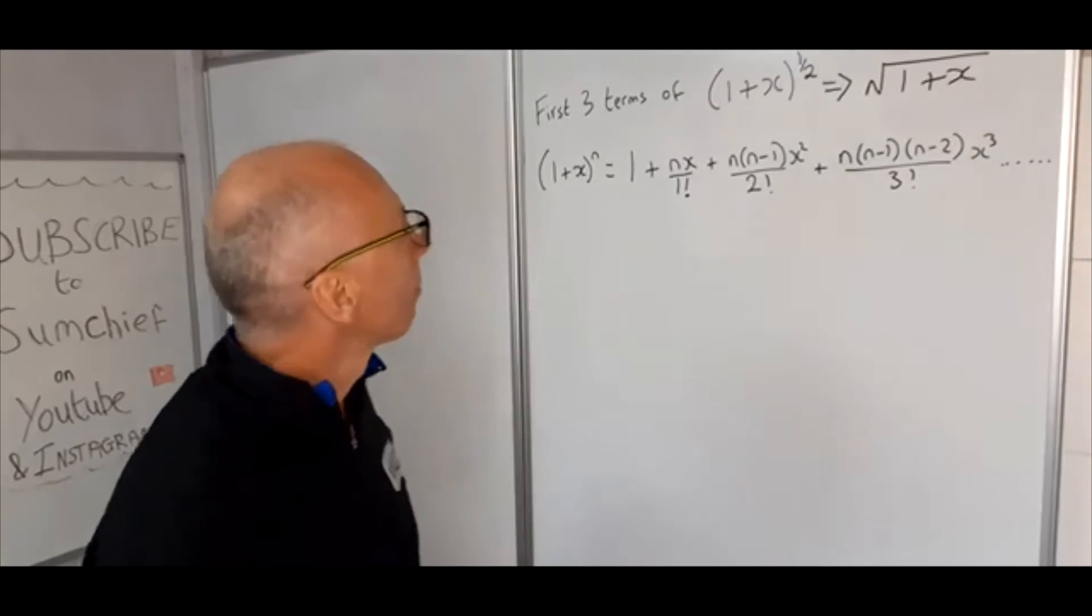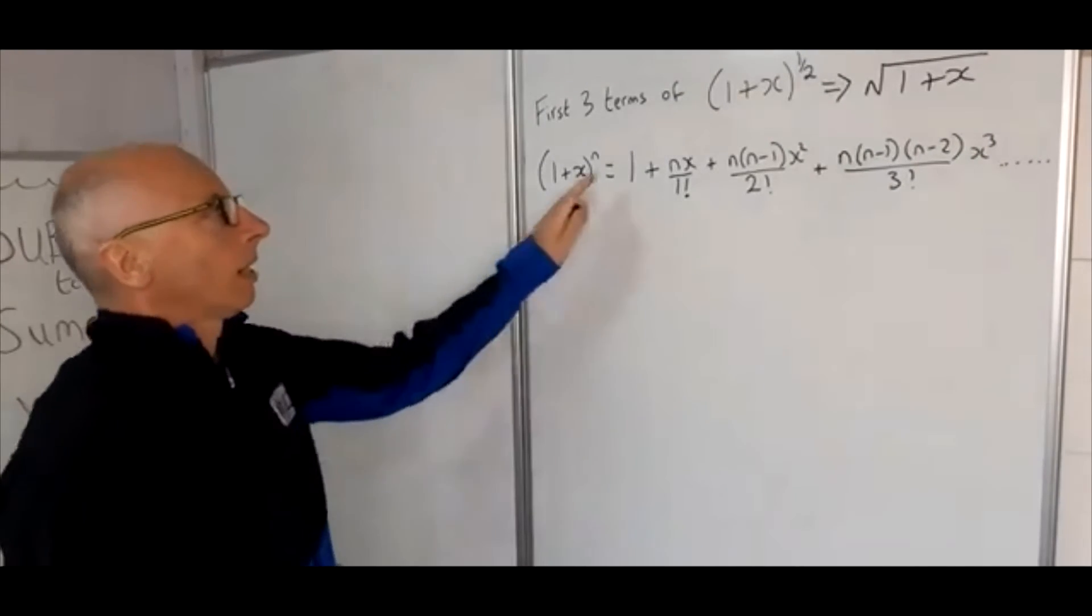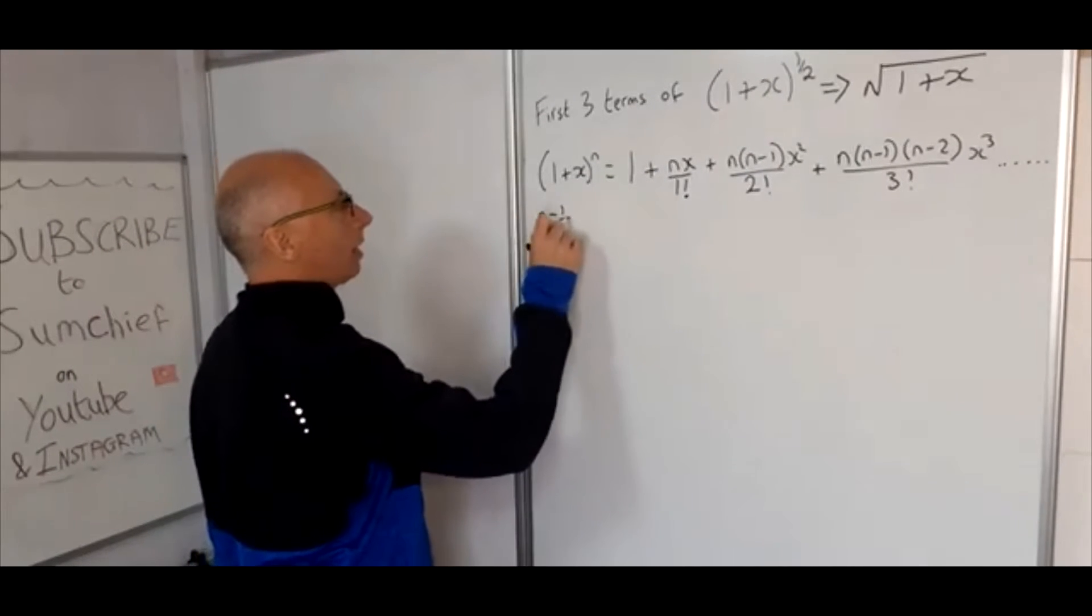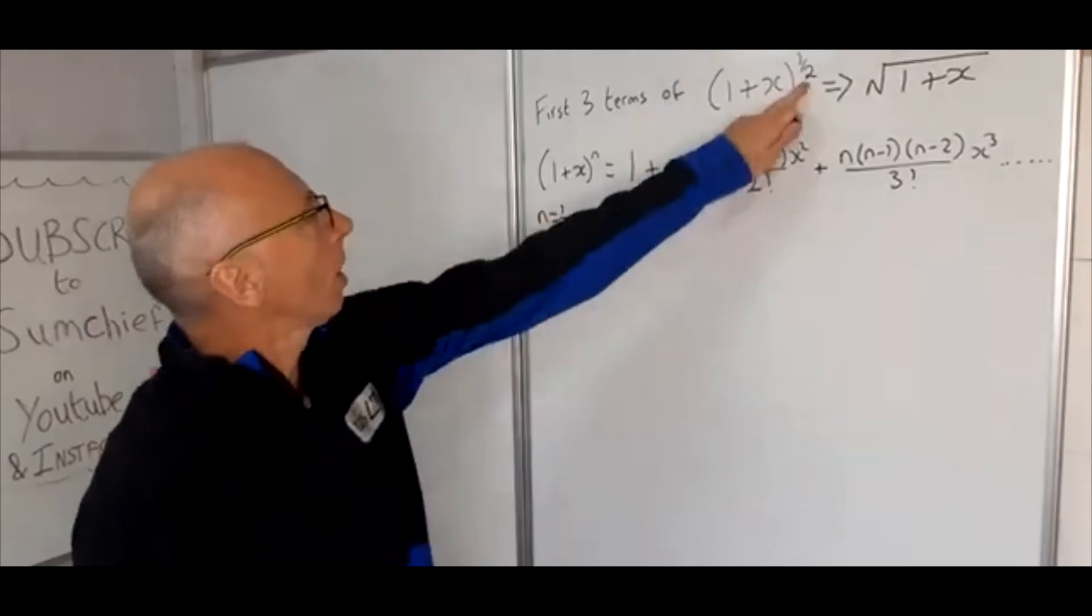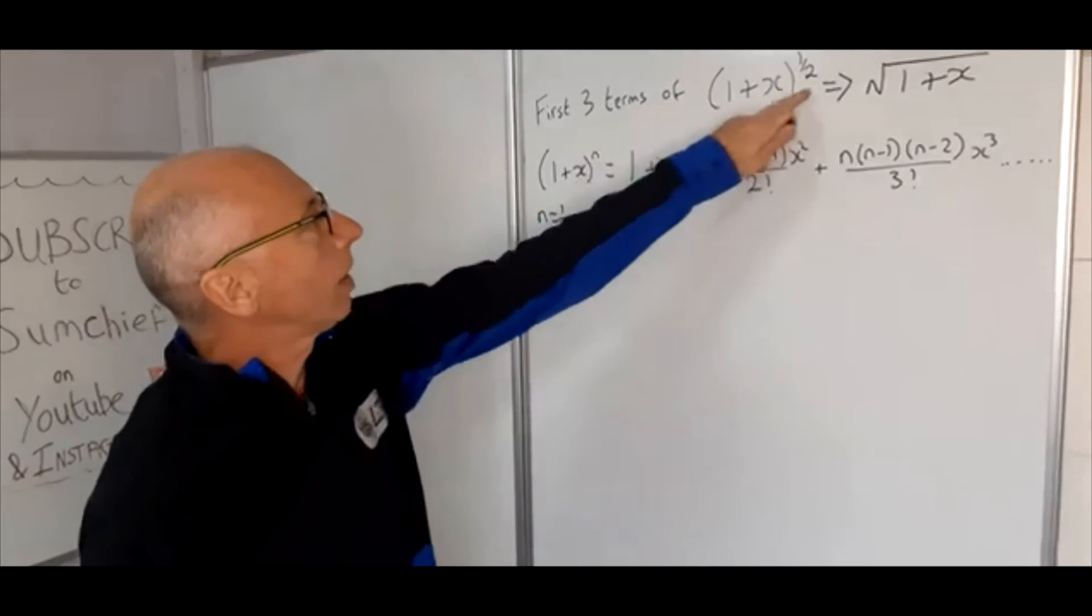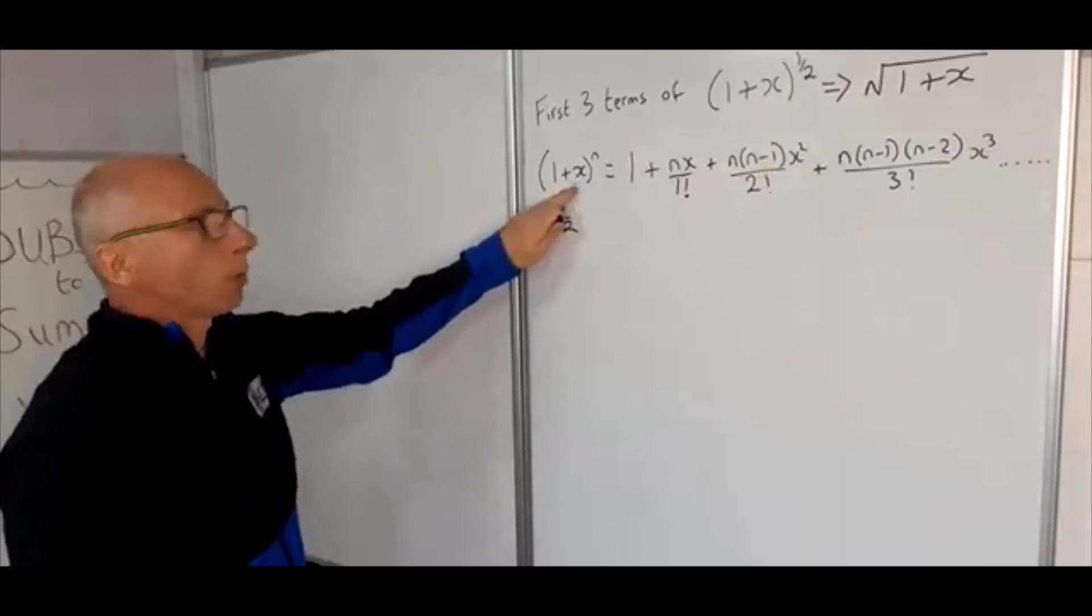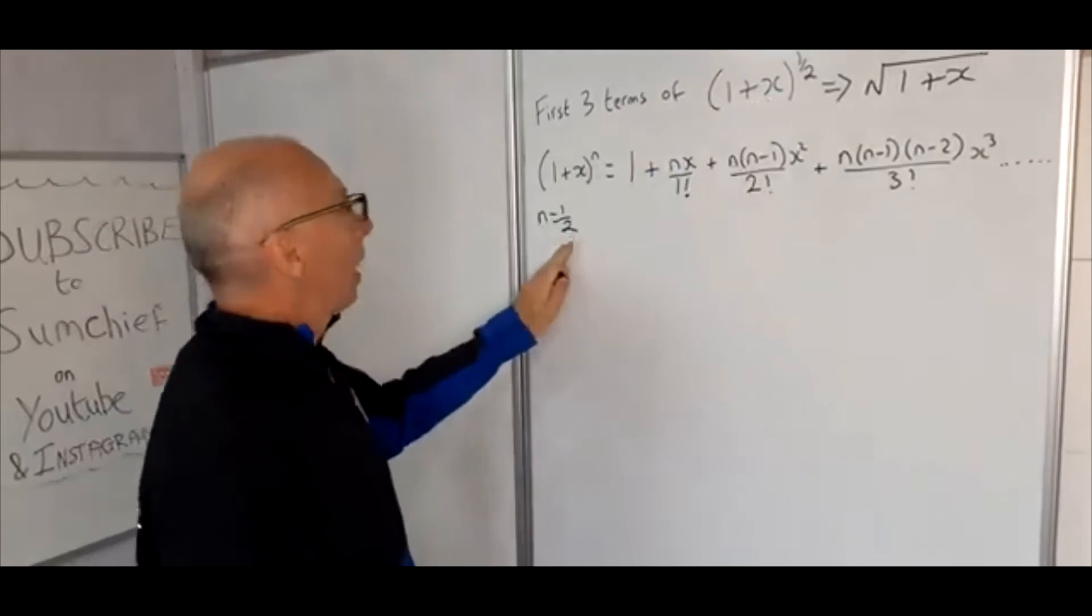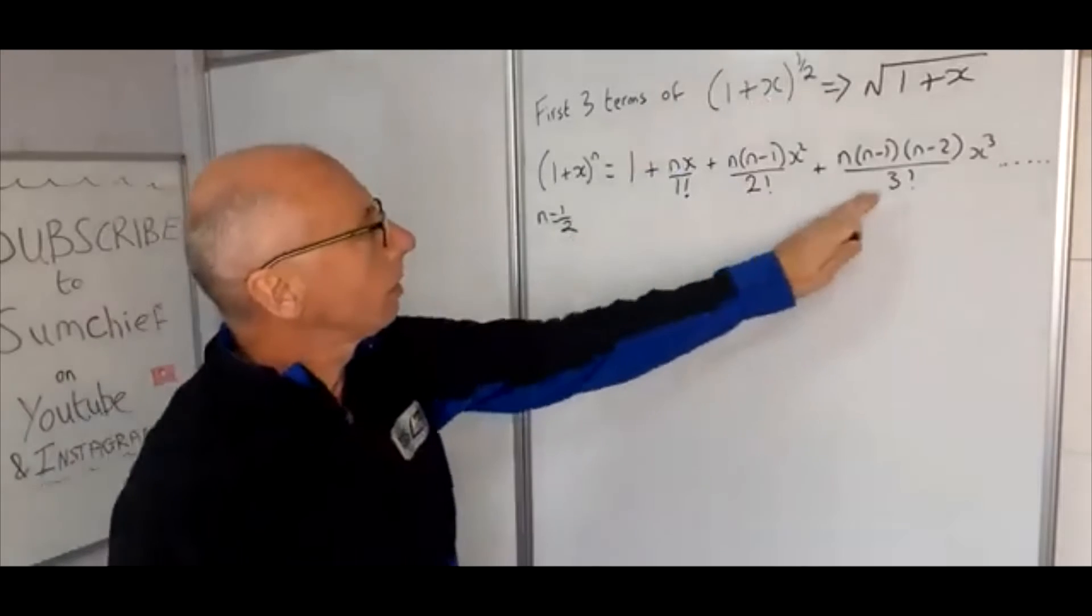Okay, so back to the question: (1+x) to the power of a half. In this instance n is a half. You can clearly see we've got the half here, and also the question is in this form as well, 1 plus x. So now we're clear to go straight in and just plug in the values.